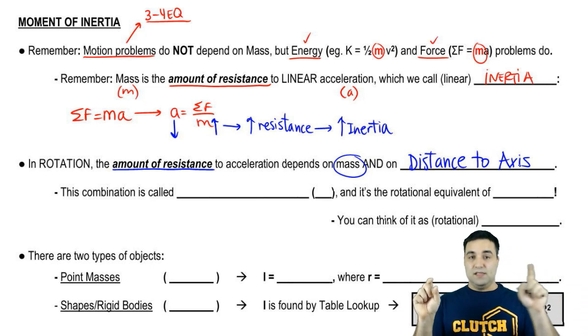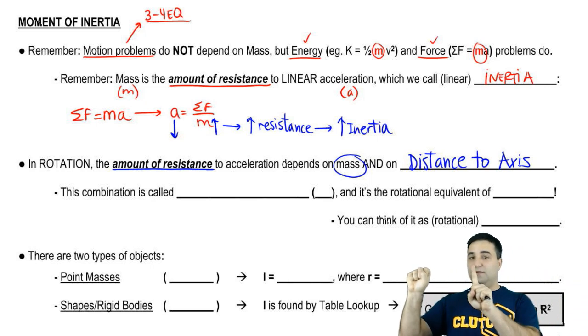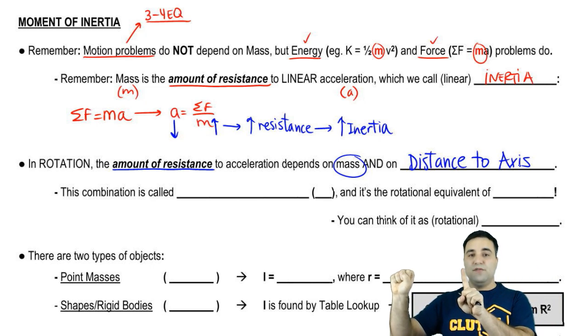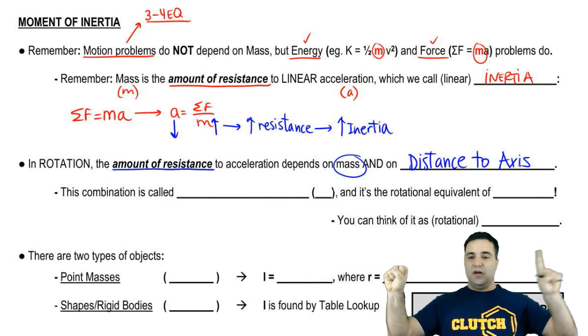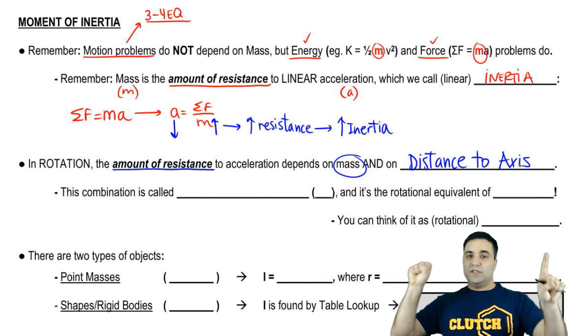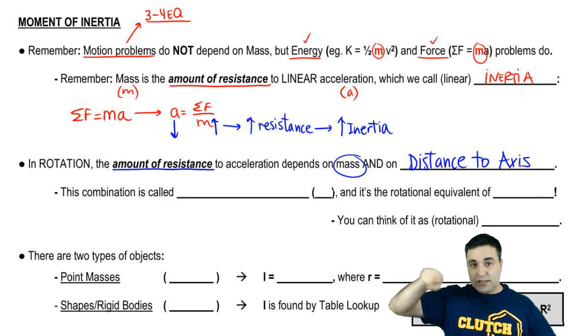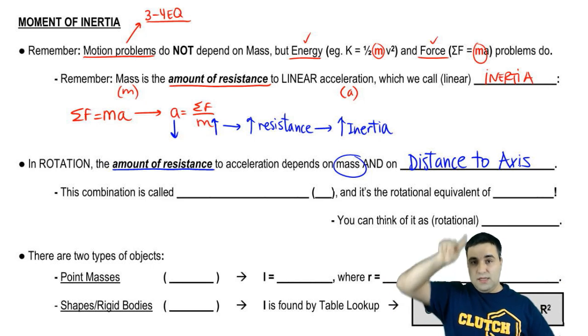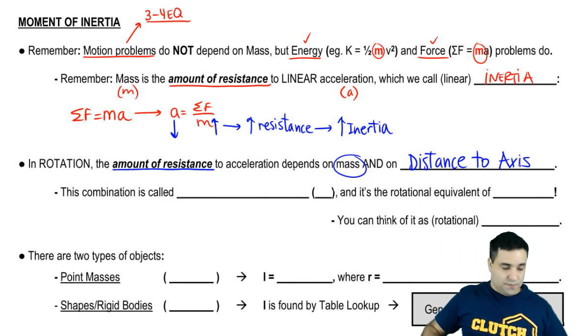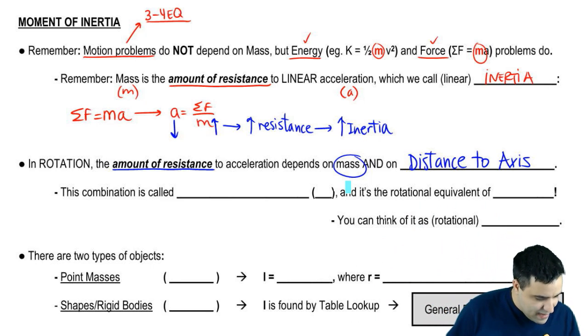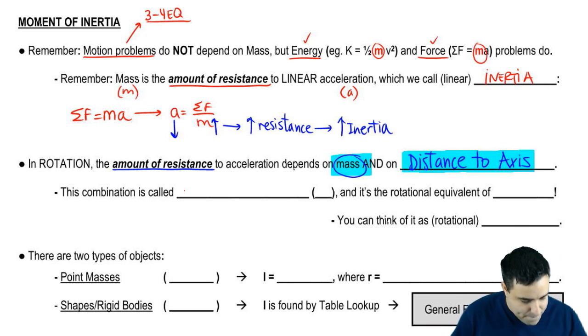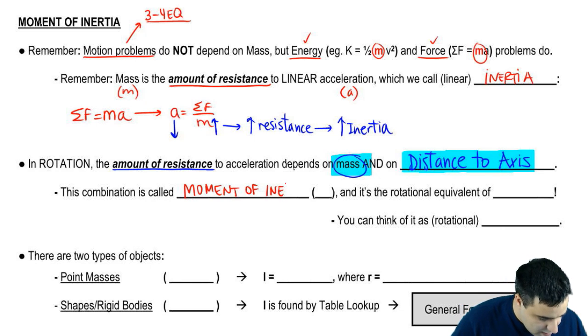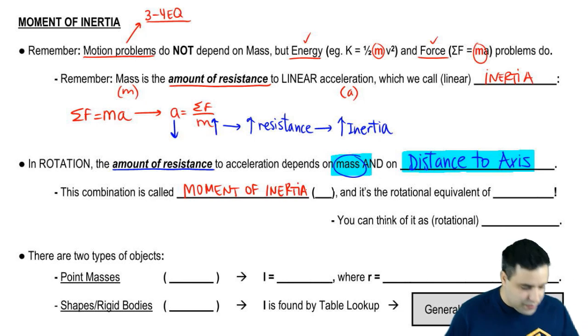So if an object spins at a distance of 10, it's going to have a different resistance than if it spins at a distance of 20 from its axis of rotation. So if you're going like this, you have less inertia than if you're going like this. So this combination of mass and distance to axis is what we call moment of inertia.